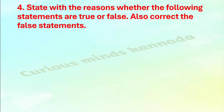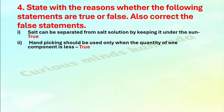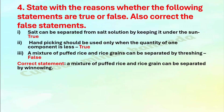Fourth question: State with reasons whether the following statements are true or false, and correct the false statements. First: Salt can be separated from salt solution by keeping it under the sun — True. Second: Hand picking should be used only when the quantity of one component is less — True. Third: A mixture of puffed rice and rice grains can be separated by threshing — False. The correct statement is: a mixture of puffed rice and rice grains can be separated by winnowing.